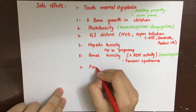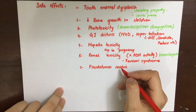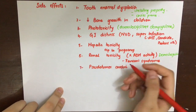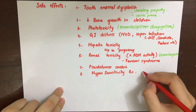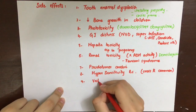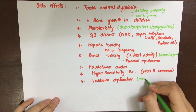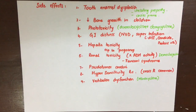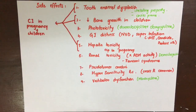Tetracyclines can also cause pseudotumor cerebri, which is increased intracranial pressure around the brain leading to various symptoms — tetracycline use is one drug-related cause. Hypersensitivity reactions can occur and cross-sensitivity is common. Minocycline has been reported to cause vestibular dysfunction. Due to tooth enamel dysplasia, decreased bone growth, and hepatic toxicity in pregnancy, all tetracyclines are contraindicated in pregnancy and in children less than eight years of age.